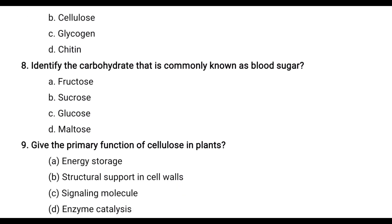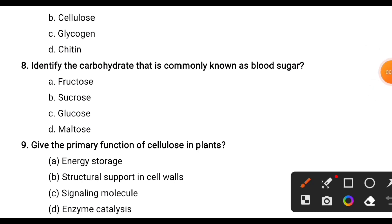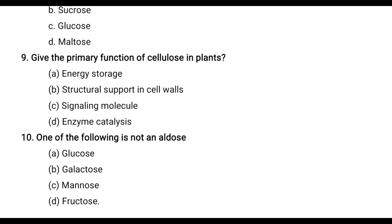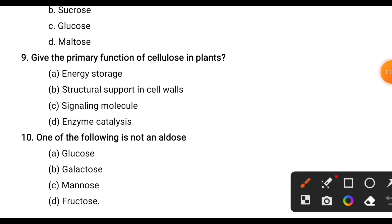Eighth question: Identify the carbohydrate commonly known as blood sugar. Options are fructose, sucrose, glucose, maltose — the correct answer is glucose. Ninth question: What is the primary function of cellulose in plants? Options are energy storage, structural support in cell walls, signaling molecule, enzyme catalysis — the correct answer is structural support in cell walls.